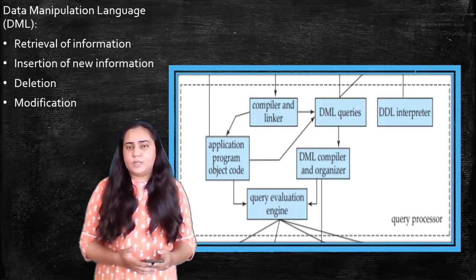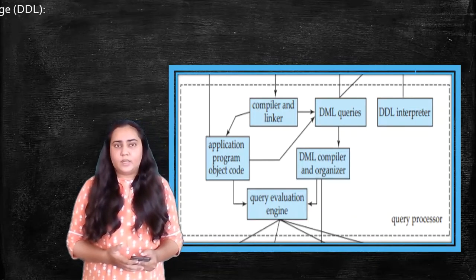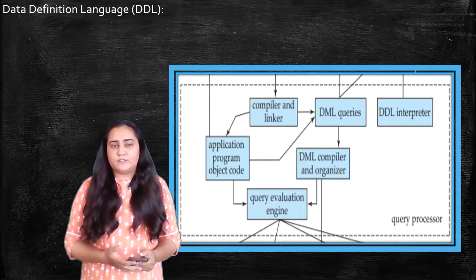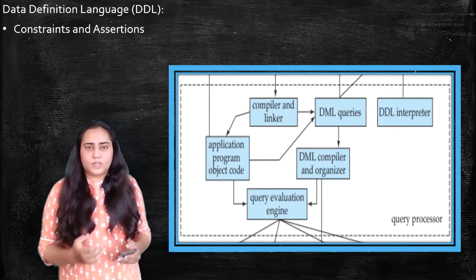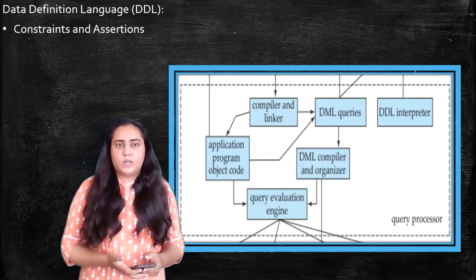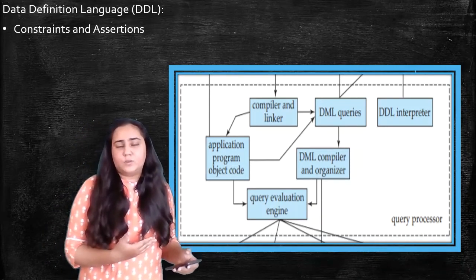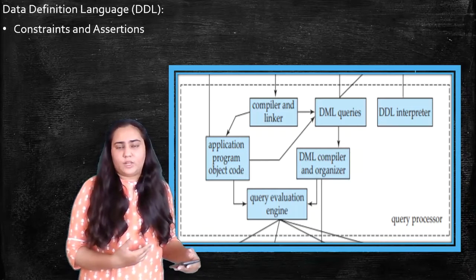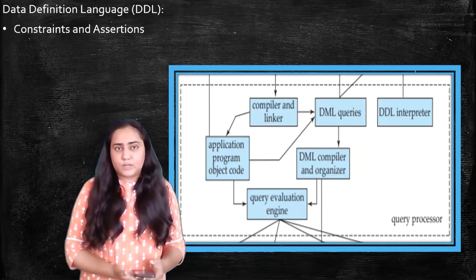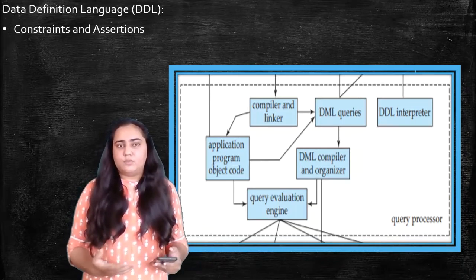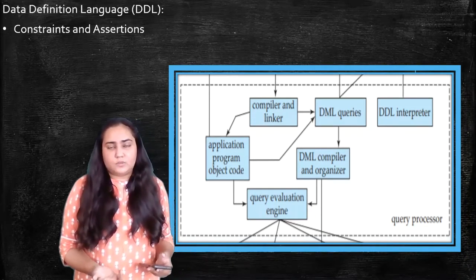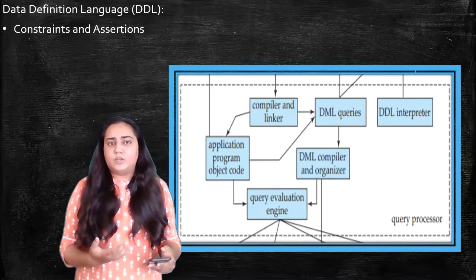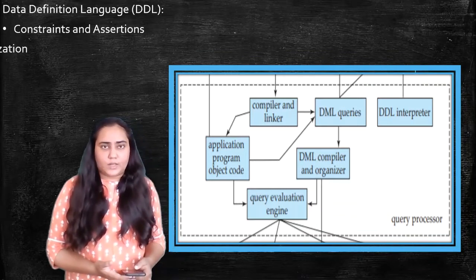The next thing you can see here is DDL. DDL stands for Data Definition Language and it deals with all the constraints and assertions which I talked to you about when I talked about authorization and integrity. These are rules and regulations to be followed, so if you want to create these rules and regulations, then you would use the Data Definition Language.